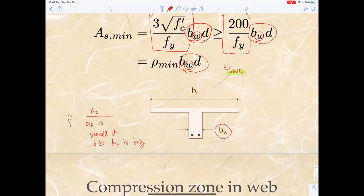But AS-min - so this might be less than rho-min, but that'll be okay if AS is greater than AS-min. And so the catch is rho uses Bf, but rho-min will be times B-web. So AS-min equals rho-min times B-web times D. Just be careful for that.